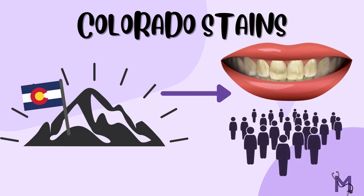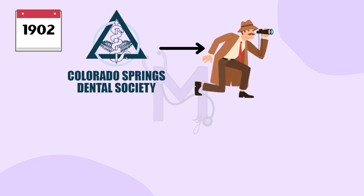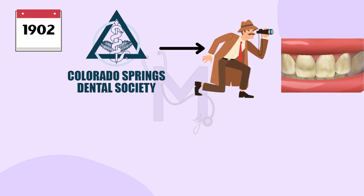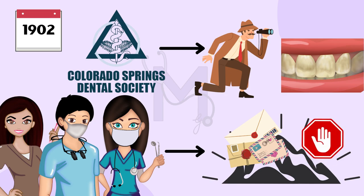People with such stains were noted to have almost no cases of caries. McKay then formed the Colorado Spring Dental Society in 1902 to investigate this lesion. He also sent out letters to dentists in the Rocky Mountain regions, but since the answers he received were limited, he had to put a rest to his further investigation.